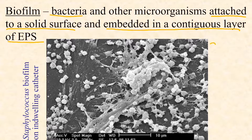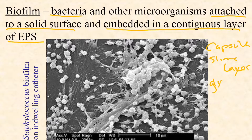So what is EPS? You may know EPS as a capsule or a slime layer. Some books use the term glycocalyx. Any of those terms are essentially equivalent to one another. EPS stands for extracellular polymeric substance — that's the chemical making up the capsule, the slime layer, the glycocalyx. Those three terms refer to the structure surrounding so many of our cells.